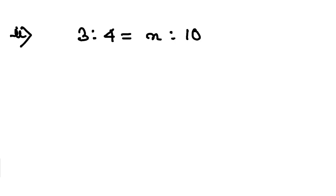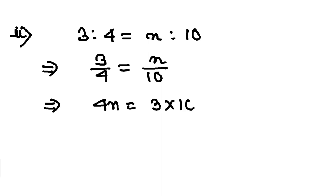Second one, 3 is to 4 equal to n is to 10. This will give you 3 by 4 is equal to n by 10. If I cross multiply you will have 4n is equal to 3 into 10, isn't it. That will give you n is equal to 3 into 10 by 4. 2 and 5. So my value of n is 15 by 2. Very easy.